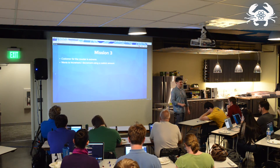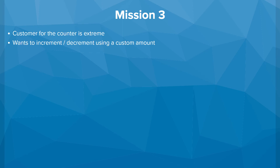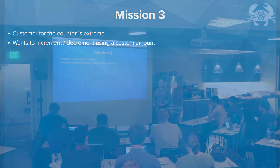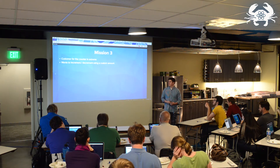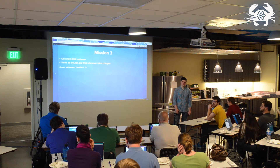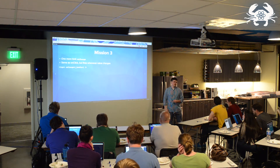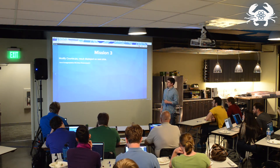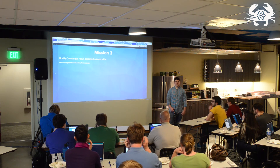We're going to do an exercise to try out updating state. Our customer is extreme — they're not satisfied with just clicking to increment by one. We want to both decrement the counter (subtract one) and also be able to change the amount being incremented and decremented. We'll have a text box to type in a number, then use that number to increment and decrement. For the text box, we need an additional tool: the onChange function attribute. onChange is invoked every single time your input changes — each time you type a character, onChange is called. You just pass it the handler. The file is counter.jsx in exercise three, and your results will be on the next slide.